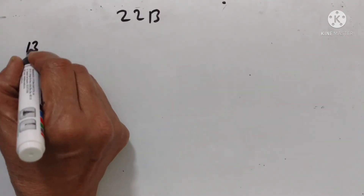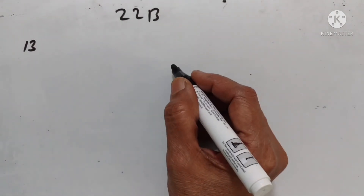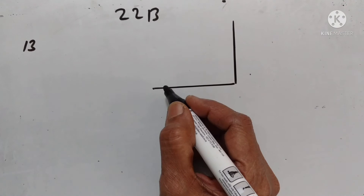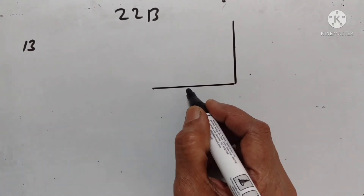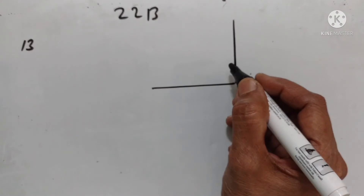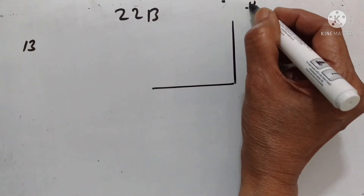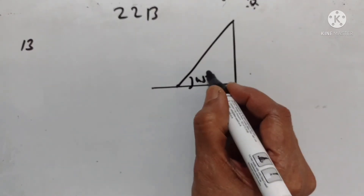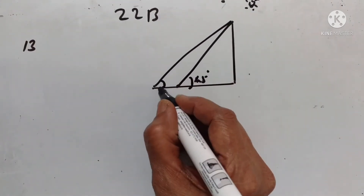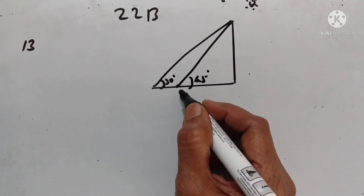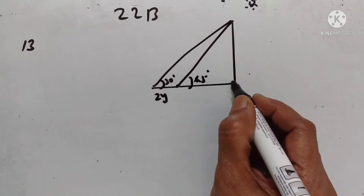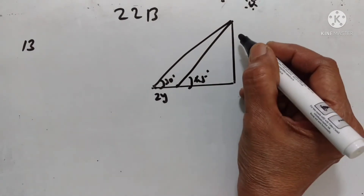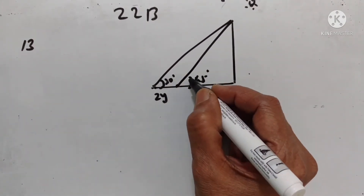Exercise 22b, 13th problem. The length of the shadow of a tower — this is the tower, this is the shadow — standing on a level plane is found to be 2y meters longer when the sun's altitude is 30 degrees than when it was 45 degrees. This shadow is 2y meters longer when the sun's altitude is 30 degrees than when it was 45 degrees.